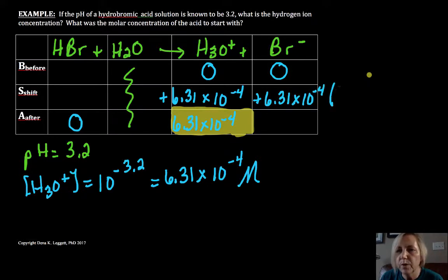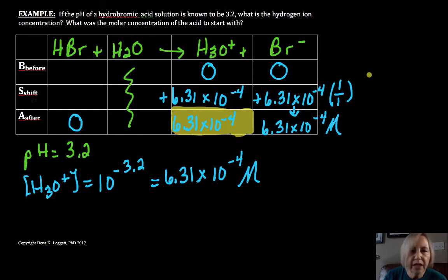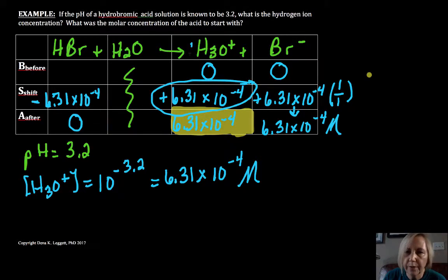This means I must have added 6.31 times 10 to the minus fourth. So if I wanted to find my bromide, that means I must have added that same amount times my mole ratio of 1 to 1. So most of you can see that you need supporting work. This is about giving you a framework to understand. Here I must have lost 6.31 times 10 to the minus fourth times my mole ratio.